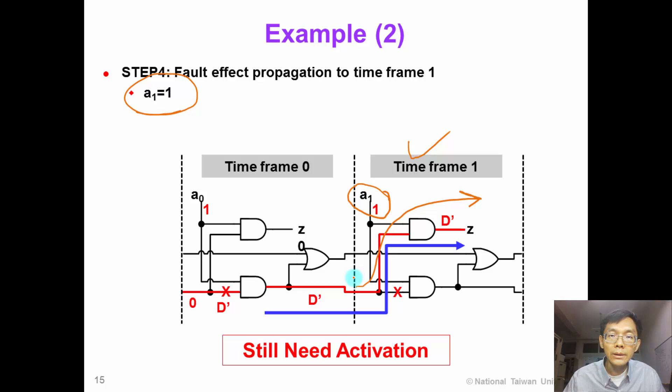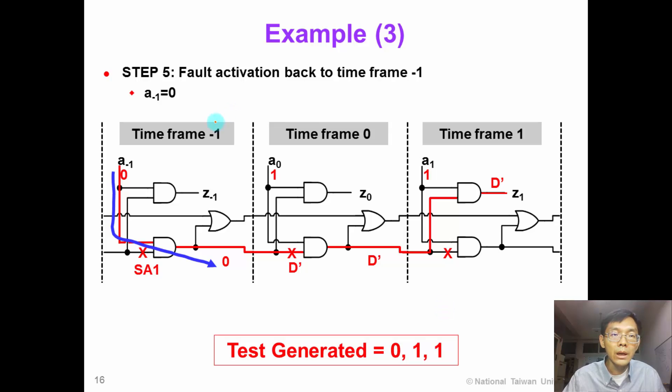But this test is not done yet because we have not yet justified this 0. So we need to expand the time frame to the left. Now we create a new time frame minus 1. To control this to 0, we will need to apply a minus 1 to be 0.